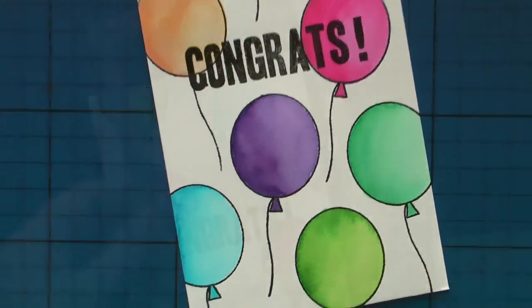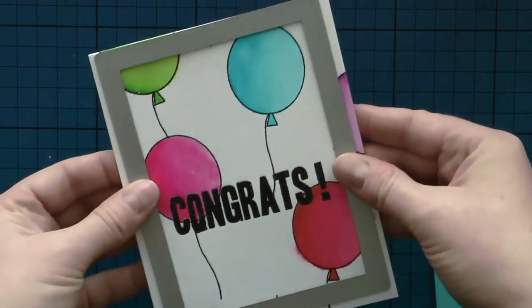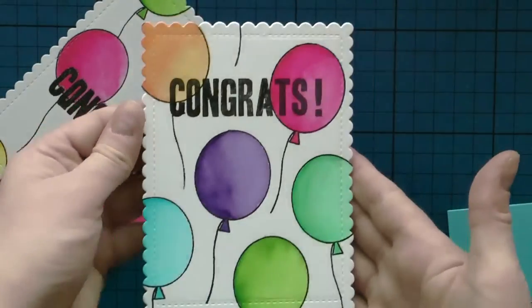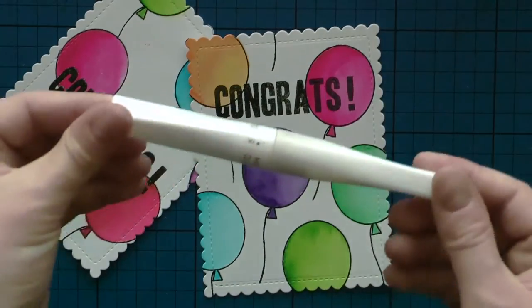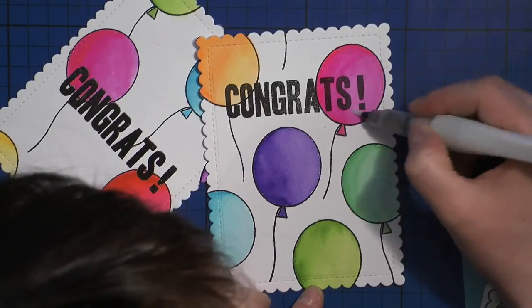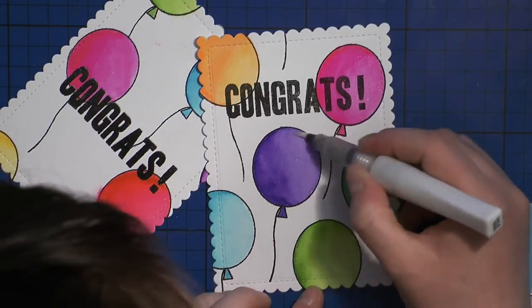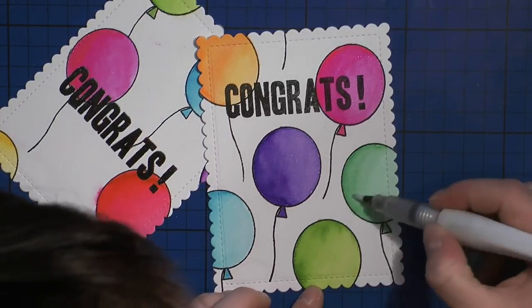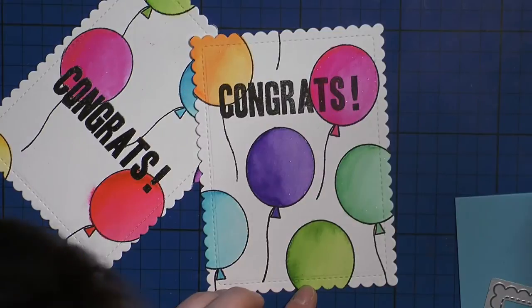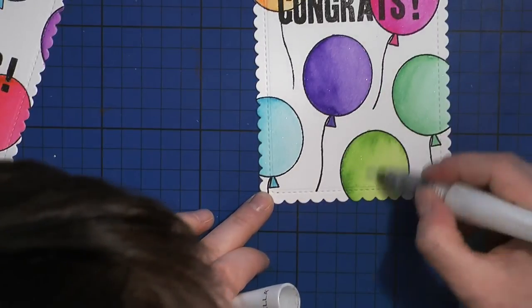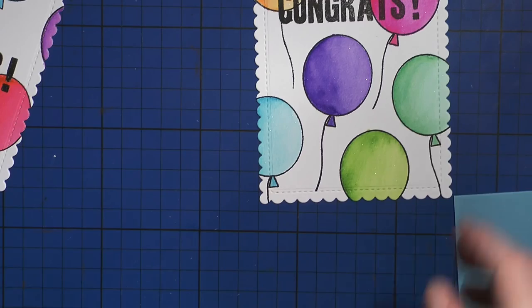And after I was done with the coloring I used the sunshine layer die by W plus 9 and I ran my panel through my die-cut machine so that I get all this beautiful scalloped edge. And then I took a clear Wink of Stella glitter pen and I went over my balloons to add a little bit of shimmer. I tried to catch it with the camera.